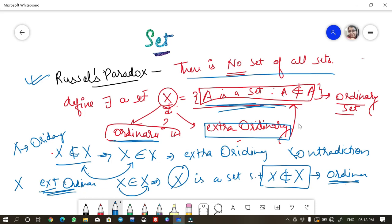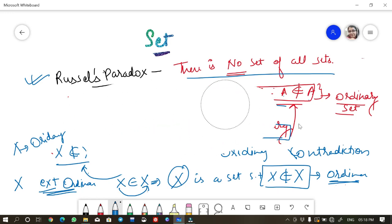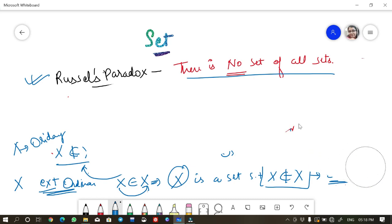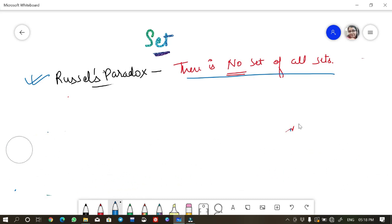So that is the main result of Russell paradox that there does not exist any set of all set. You can get a contradiction by simply taking a set of collection of all the ordinary sets. And whether this set is ordinary or extraordinary, you will get your contradiction.